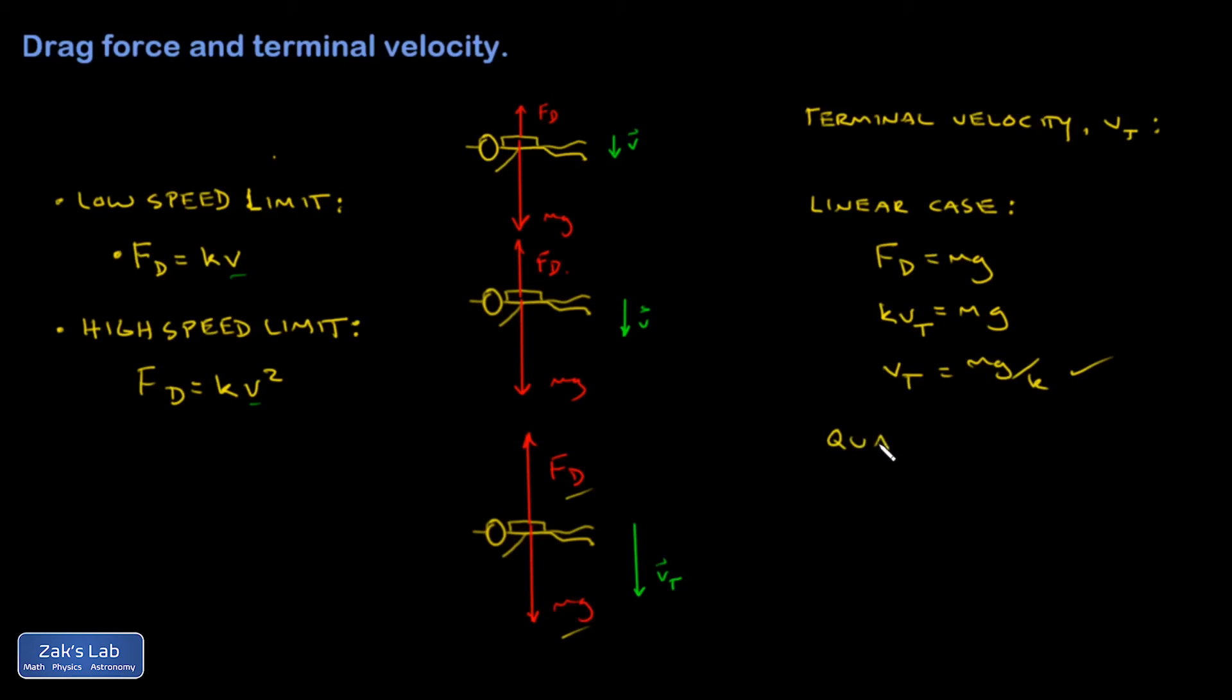The quadratic case, that's the v squared case. It's more accurate for high speeds. The drag force is equal to the weight, so that the velocity levels off to a constant. But this is the model where the drag is proportional to v squared. I divide by k, and then square root both sides, and I get vt is the square root of mg over k.